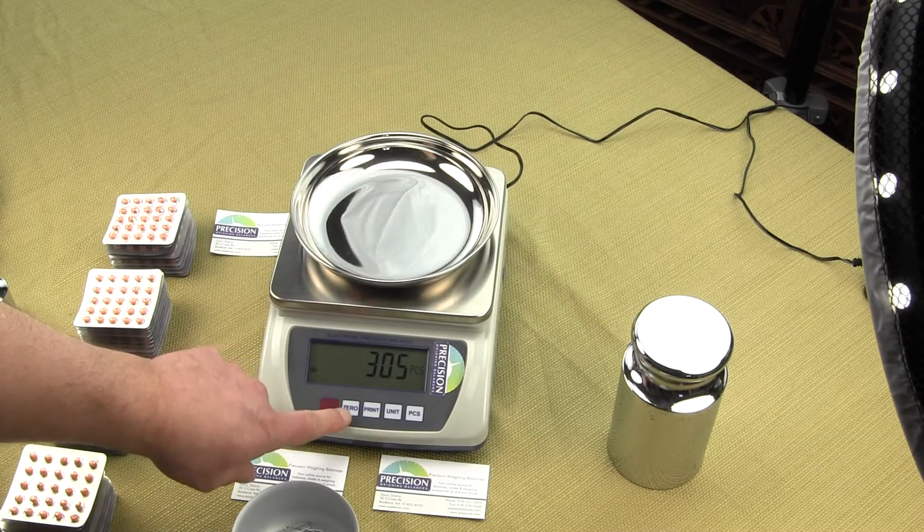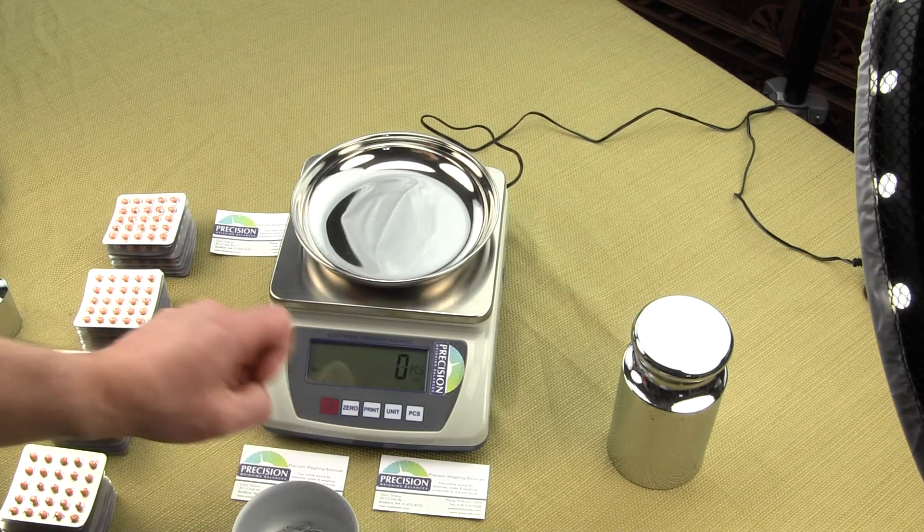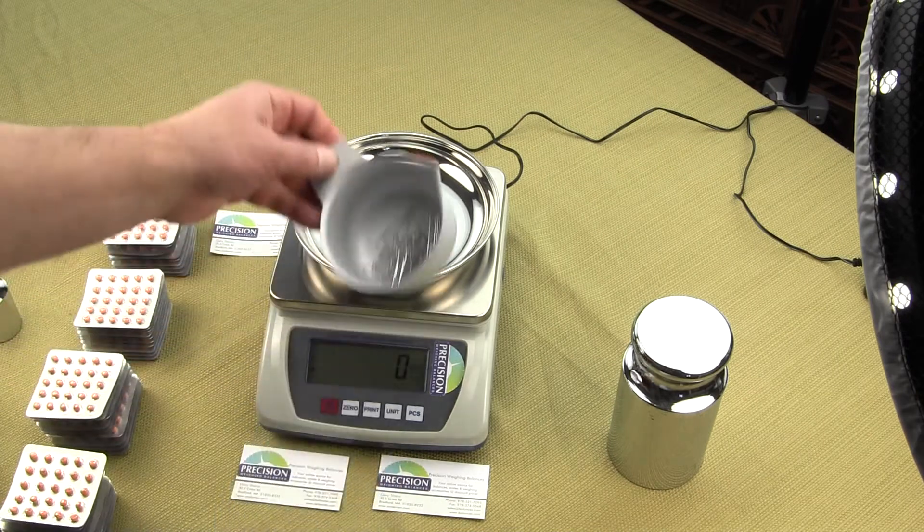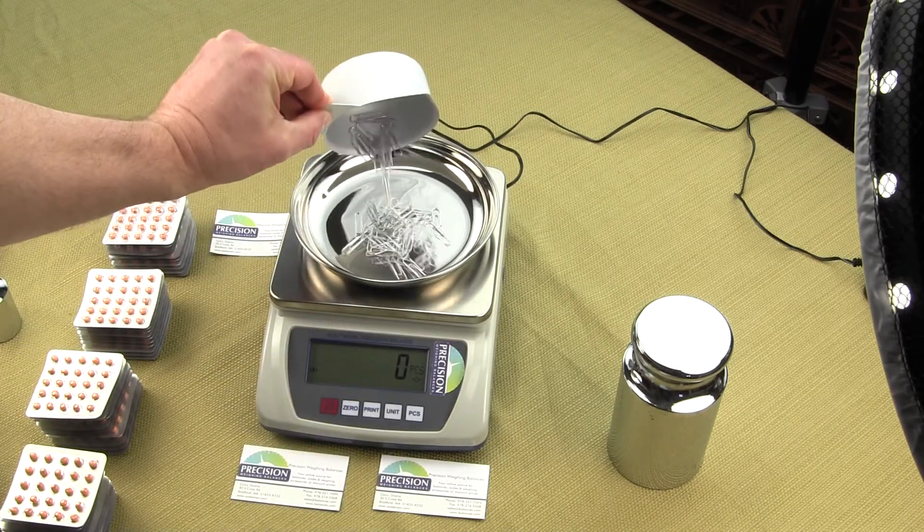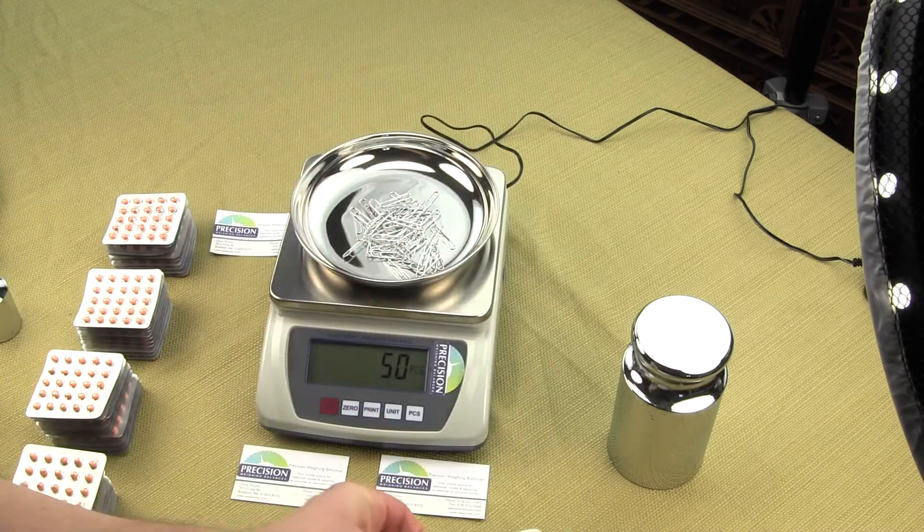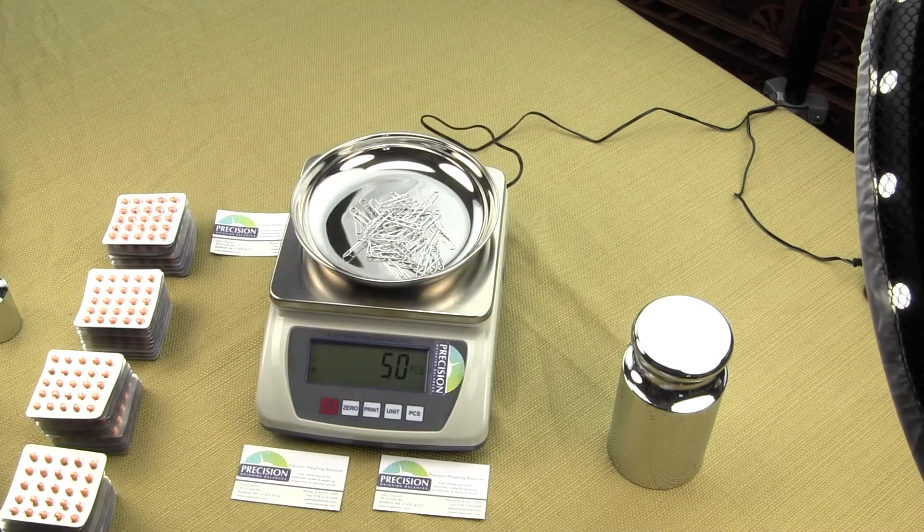What we could do is put on a nice dish. By pressing the zero key, we could tare out that weight value. And now, these are the 50 paper clips that I just removed. So you could zero it out.